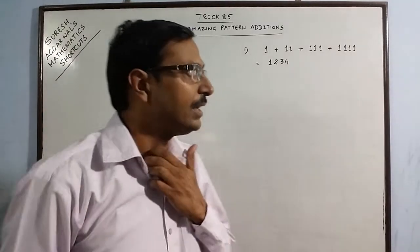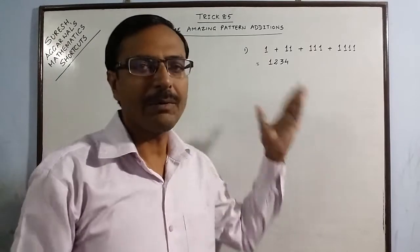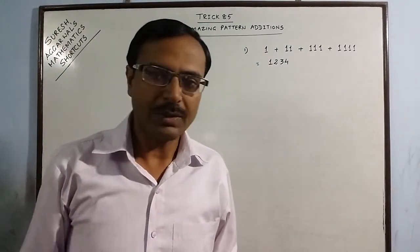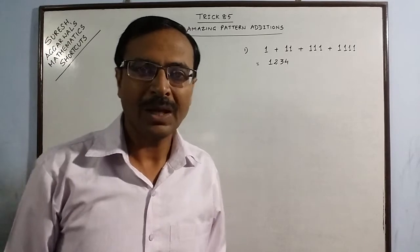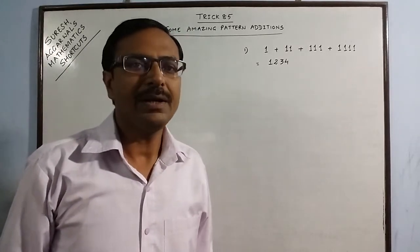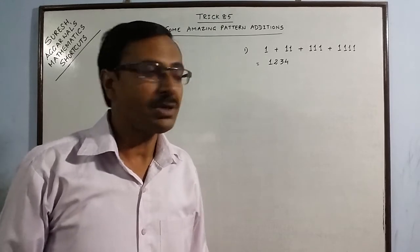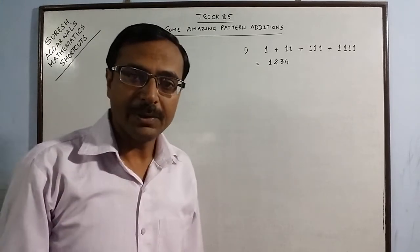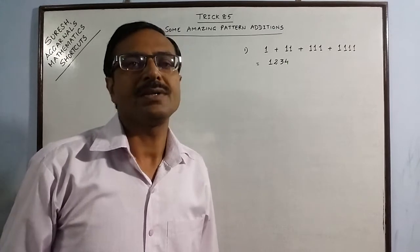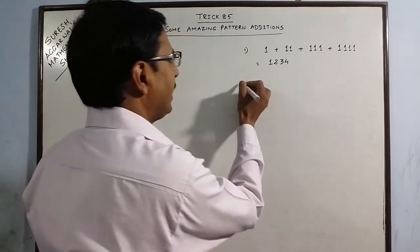Likewise, if you take five ones the answer will be 12345, six ones gives 123456, and so on. Using this pattern you can find the sum of very special sequences of numbers which are quite often asked in competitive exams.